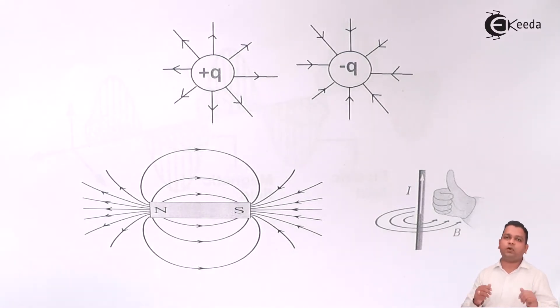In case of charged particles, the charge in static condition produces electric field. Whereas, when it is in dynamic condition, when it is in motion, we say it is flow of current.